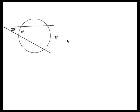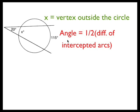The vertex is outside the circle, so the angle will be half the difference of the two intercepted arcs.